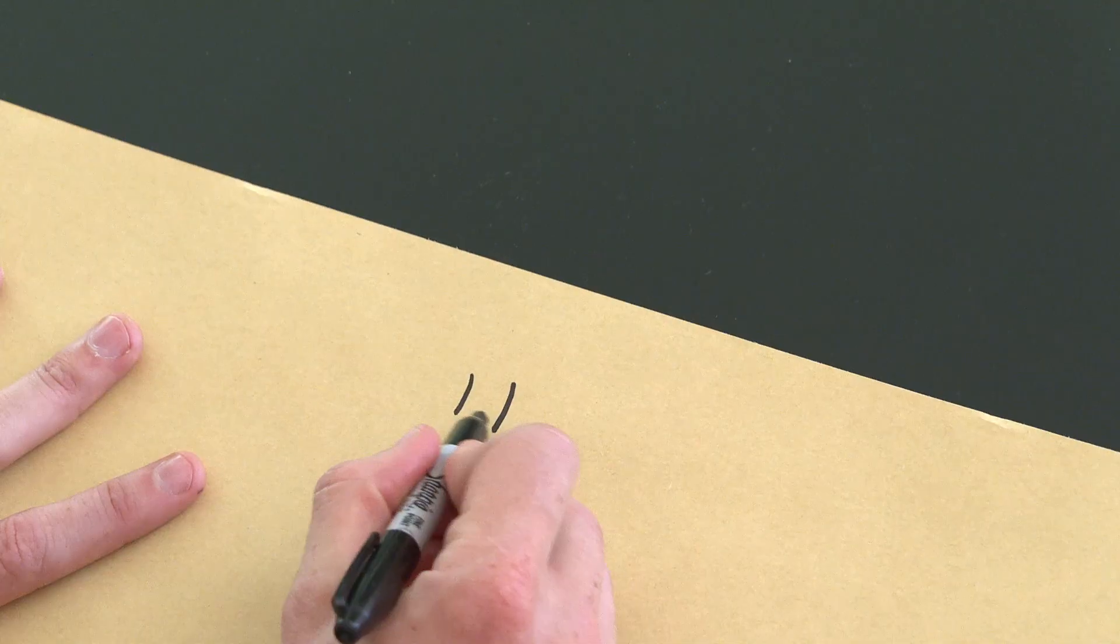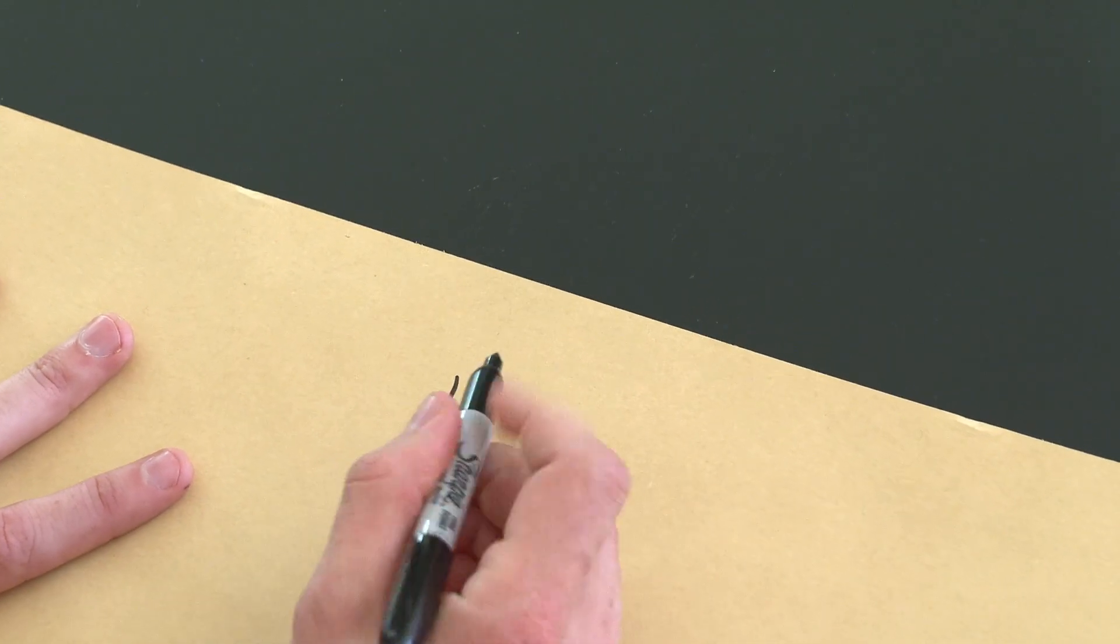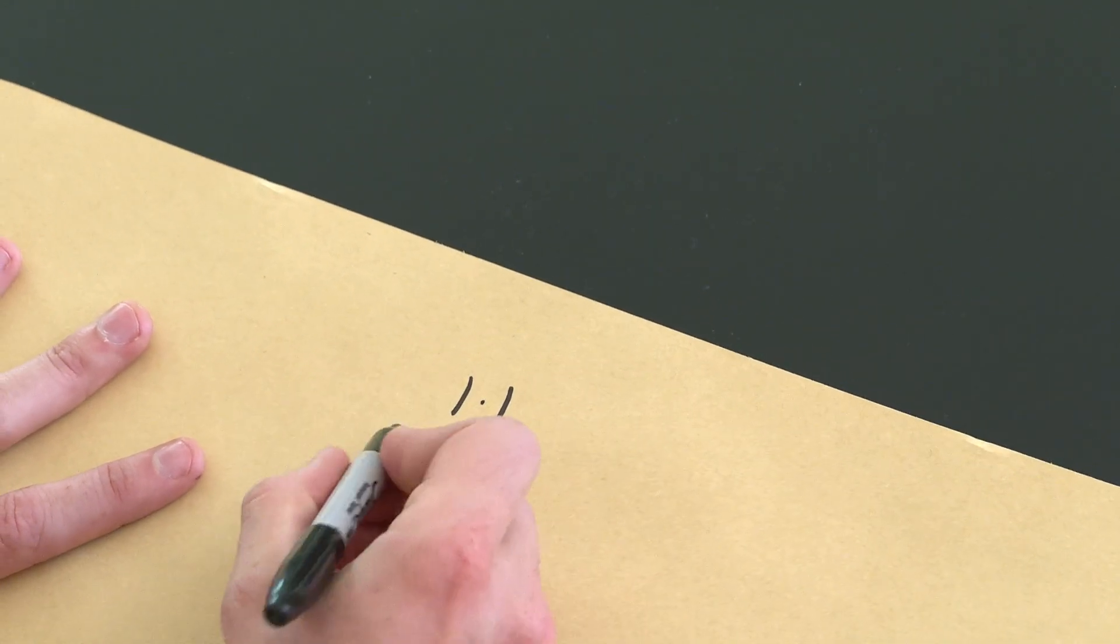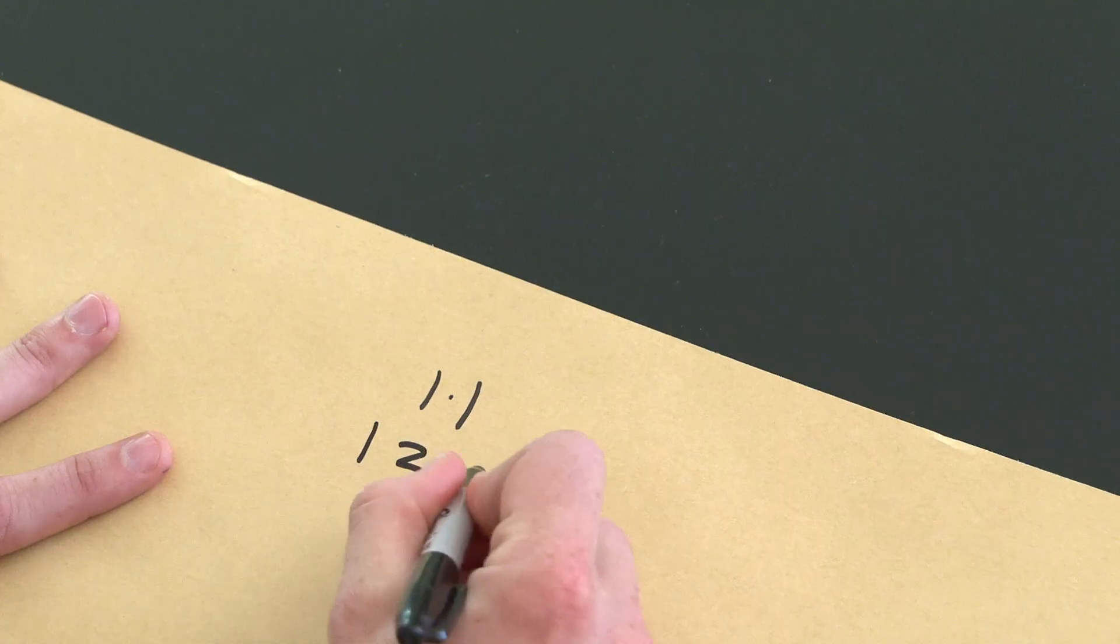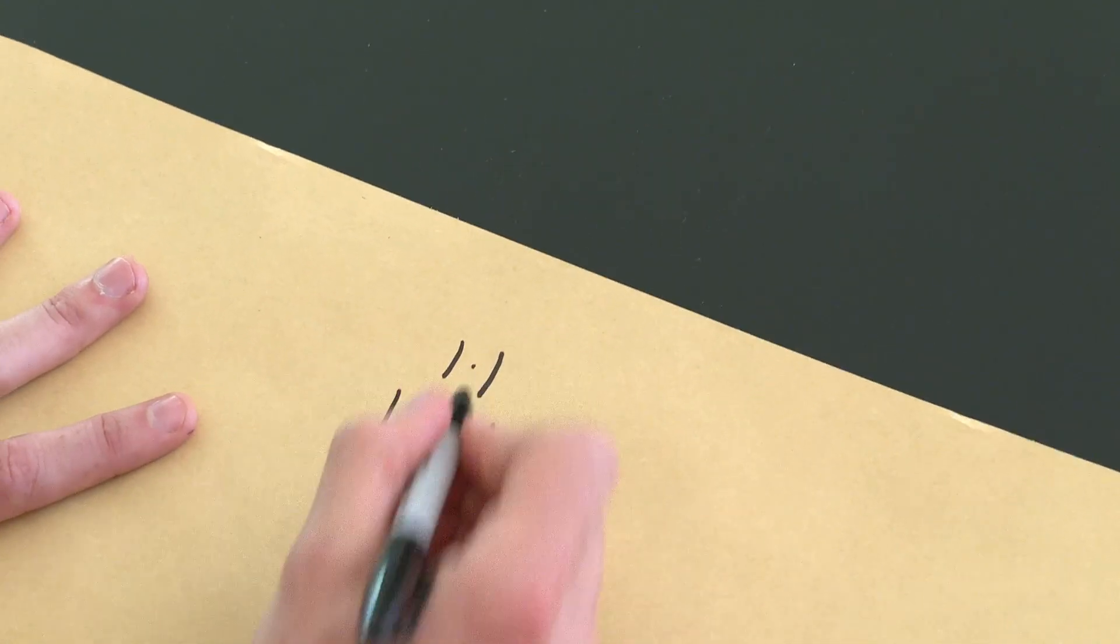Then for the next row, every time an adjacent pair of numbers adds up to 2, I'm going to insert that in between them. So I'm going to take a 2 and put it in between those two ones.